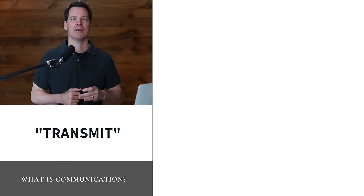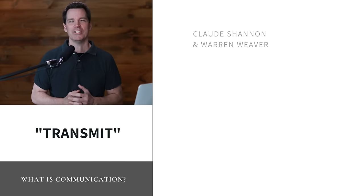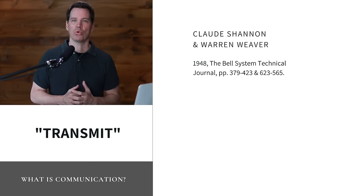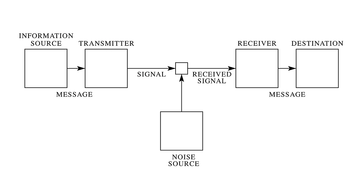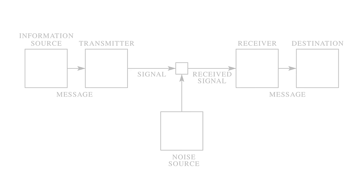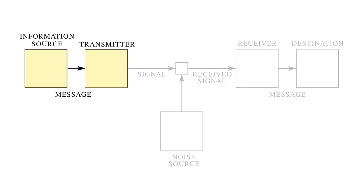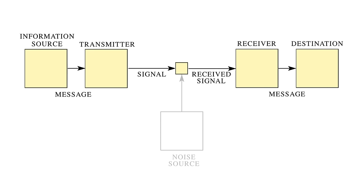Some people think communication is about how we transmit information. In 1948, Claude Shannon and Warren Weaver developed a foundational model of communication that you'll see in most textbooks. From their view, communication happens when an information source, a sender, has a message and transmits that message in the form of a signal through a channel. That signal is received by the receiver at its final destination. Along the way, there might be some noise in the communication system that could negatively influence the process.